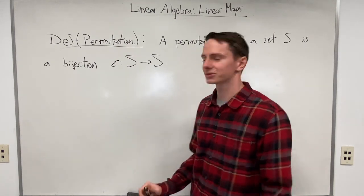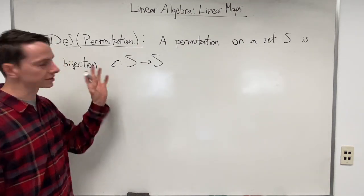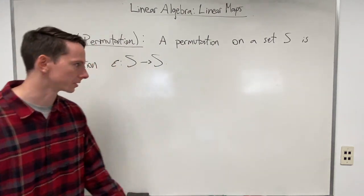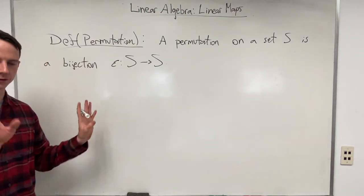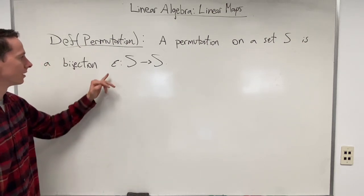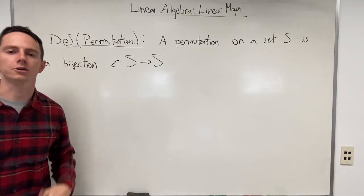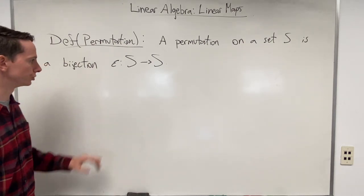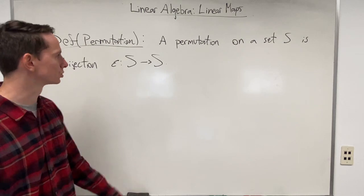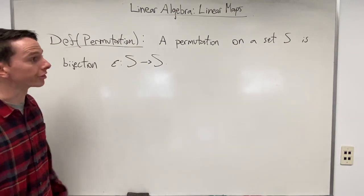This seems like a very general, arbitrary definition, so I want to spend time unpacking it because it doesn't need to be complicated. In terms of notation, permutations often get denoted by a Greek letter — the notes use epsilon, but you might also see rho, sigma, or tau. It's one of those unspoken rules in math where we typically write permutations as Greek letters.